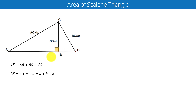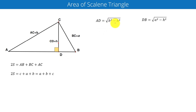Let us consider the length of CD is equal to h. So AD is equal to the square root of b squared minus h squared, by using the Pythagorean theorem in triangle CDA. Similarly, applying the Pythagorean theorem in triangle CDB, we can find the length of DB.